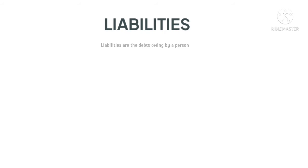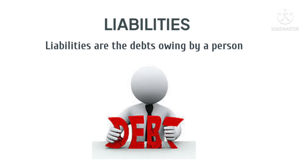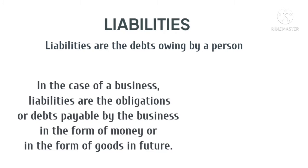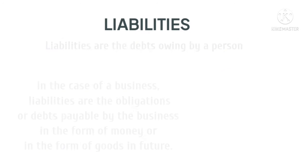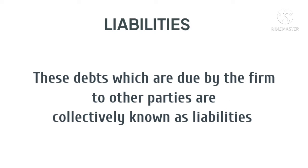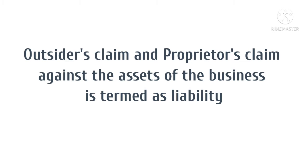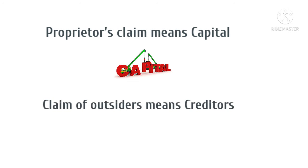Liabilities are the debts owing by a person. In the case of a business, liabilities are the obligations or debts payable by the business in the form of money or in the form of goods in future. Hence, the debts which are due by the firm to other parties are collectively known as liabilities. Outsider's claim and the proprietor's claim against the assets of the business is termed as liability. Proprietor's claim means capital and the claim of outsiders means creditors.